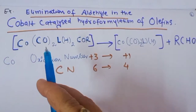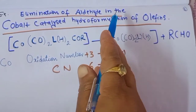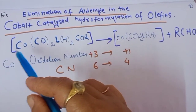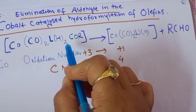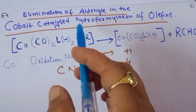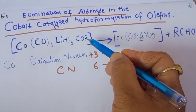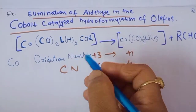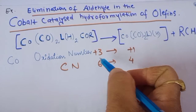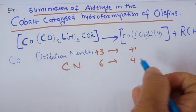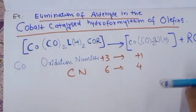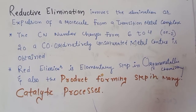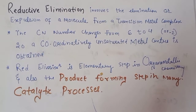Another example is the elimination of aldehyde in cobalt-catalyzed hydroformylation of alkenes. In this cobalt complex with two carbonyl ligands, one hydrogen and one RCO group are present. The RCO group is eliminated together with hydrogen to form an aldehyde (RCHO). The cobalt oxidation state changes from +3 to +1, and the coordination number changes from 6 to 4.